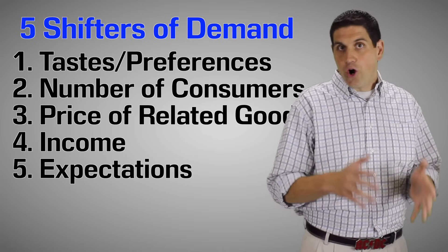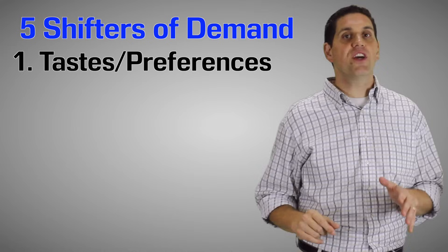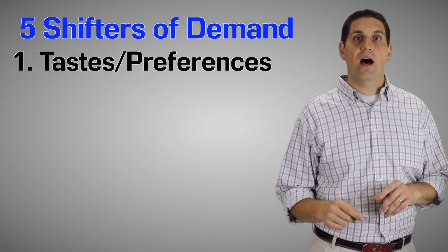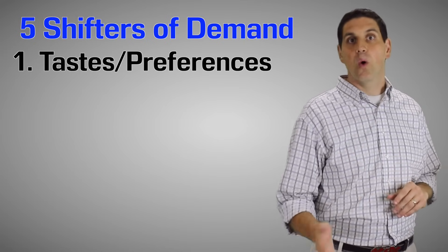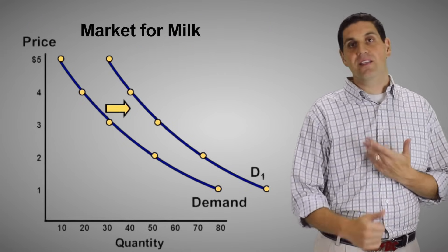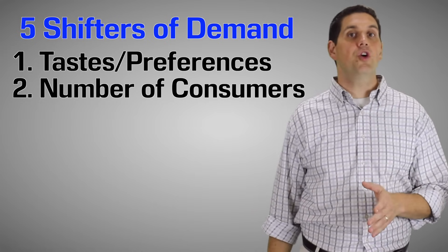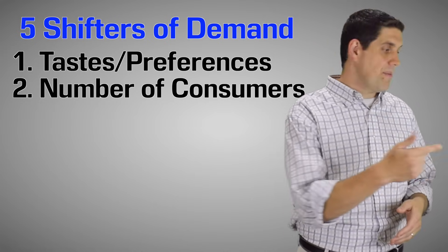Now there's five shifters or determinants of demand. These are the things that cause the demand curve to shift. The first shifter of demand is tastes and preferences. For example, what if a new study comes out that says that kids who have milk in the morning before they go to school do better at school and they're smarter? Well, that would increase the demand. The demand curve would shift to the right. Another shifter would be the number of consumers. If all of a sudden new customers come into town, that's going to increase the demand for milk.